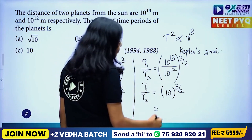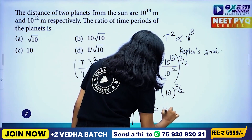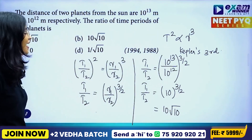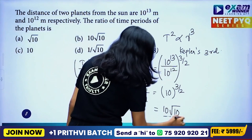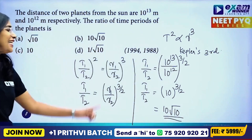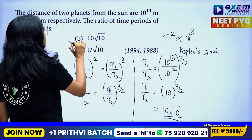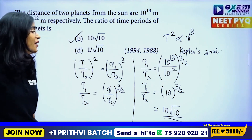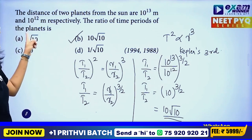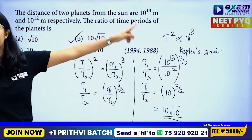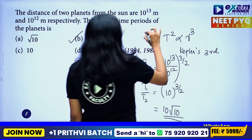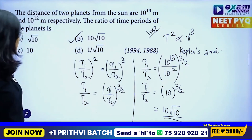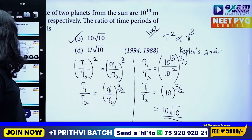Is that 10 whole raise to 3 by 2? That gives 10 root 10. So the answer is 10 root 10. T squared proportional to R cubed is important. All the relation is important. T squared proportional to R cubed is important.